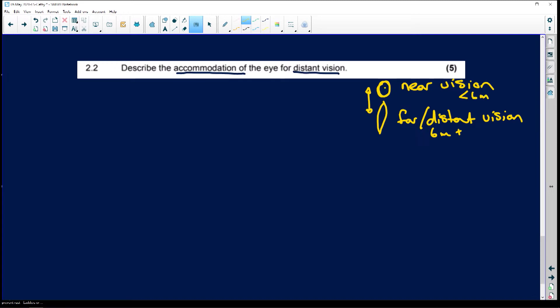It is the changing of the shape of the lens because it changes the refractive power of the light image that comes in and the way the light rays are on the lens.